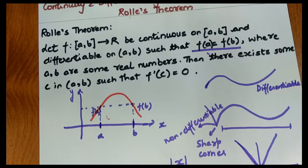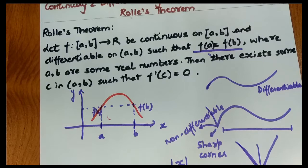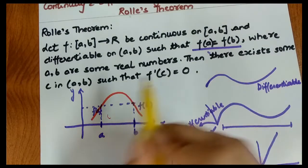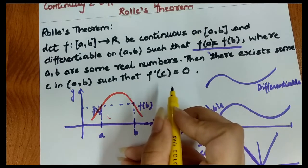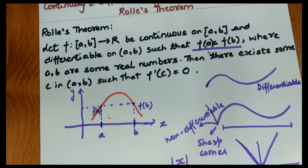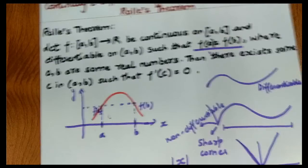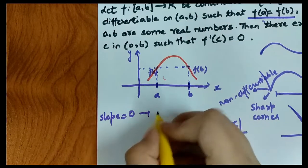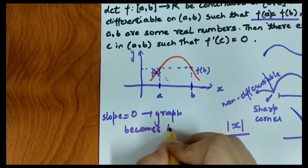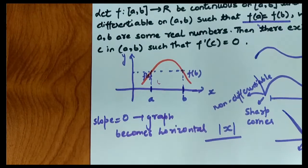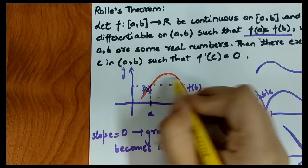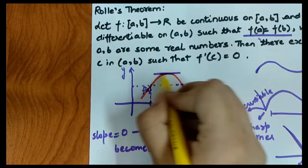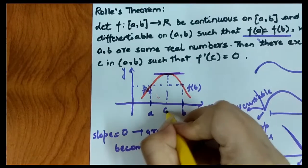If our graph satisfies the three conditions — f(a) = f(b), continuous, and differentiable — then the fourth condition is that a point c exists in (a, b) where the derivative is zero. When the derivative is zero, the slope is zero, meaning the graph becomes horizontal at that point. You can see on the graph that it is horizontal at point c, so point c exists.